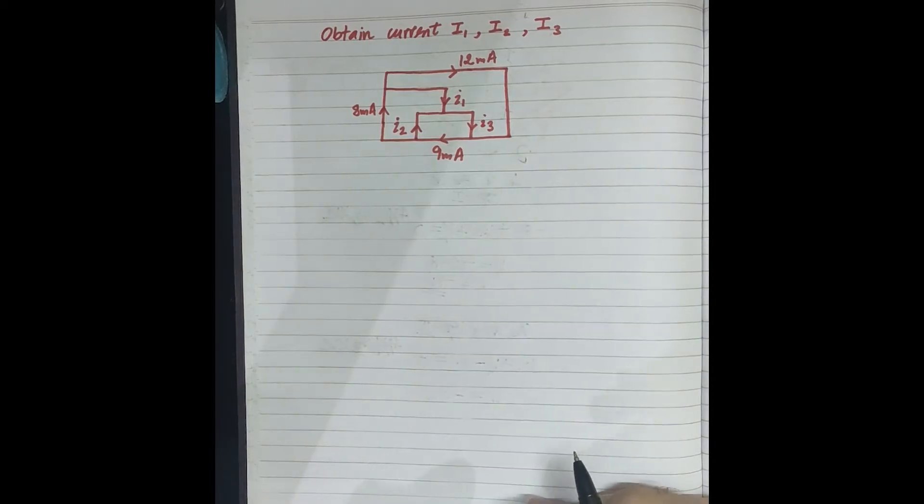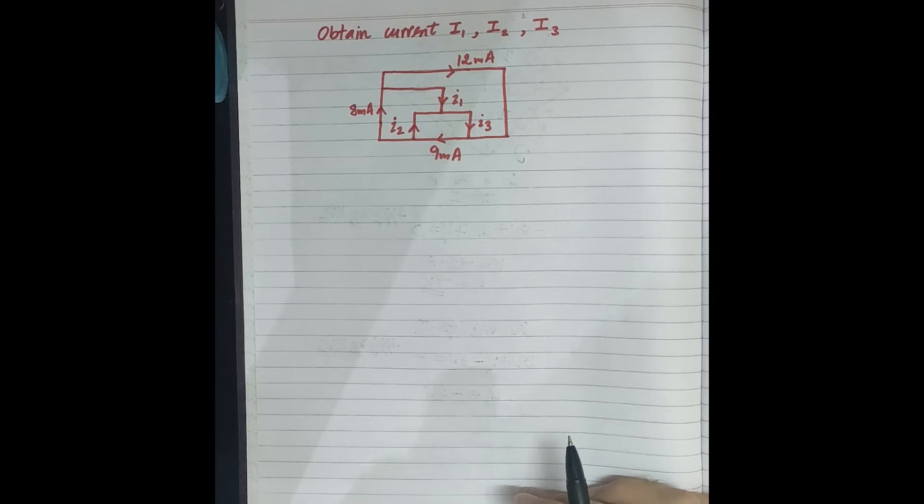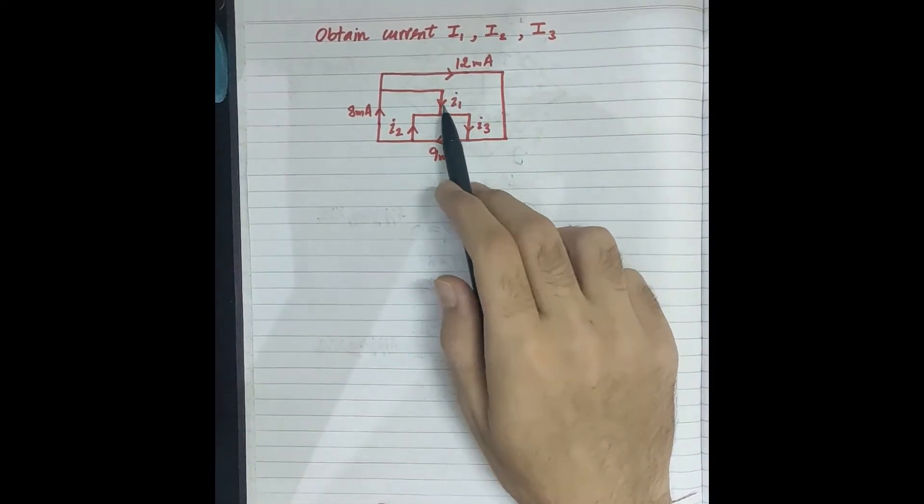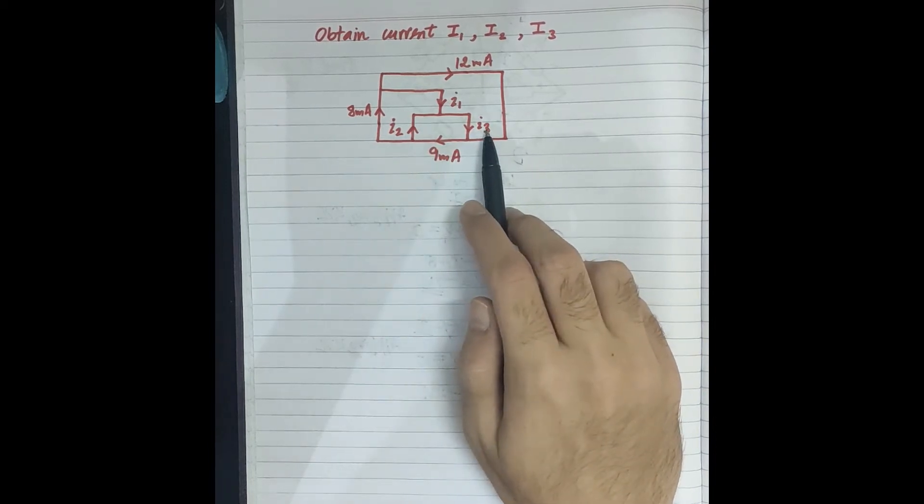The next question is on Kirchhoff's current law. In this question, we have to find the values of currents I1, I2, and I3 in the circuit.